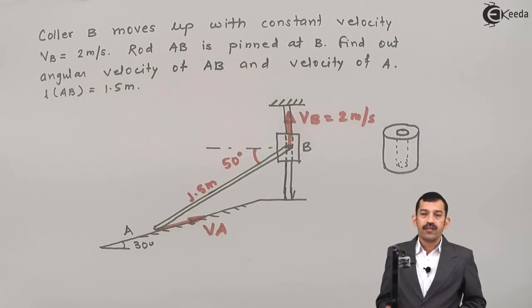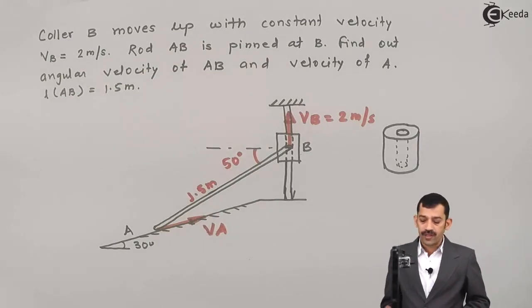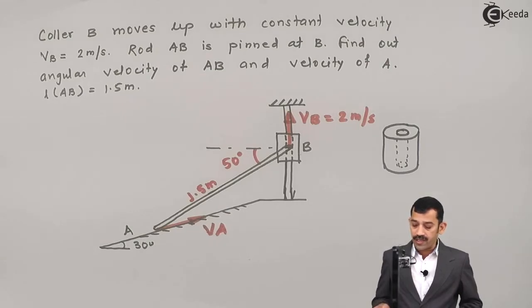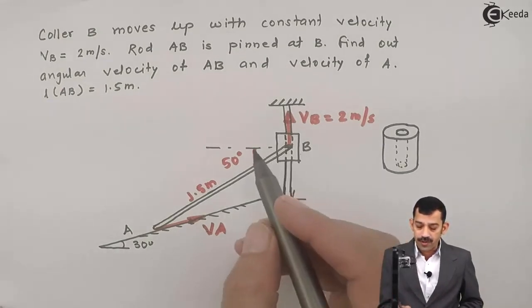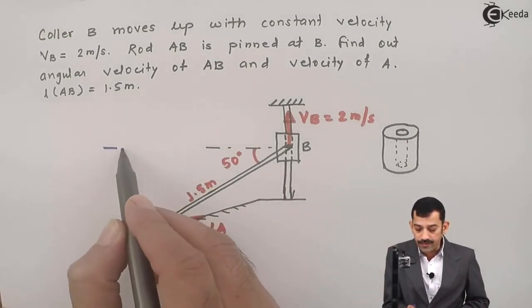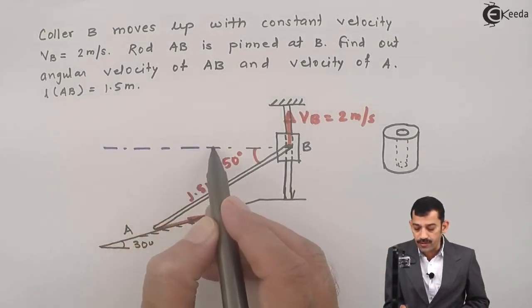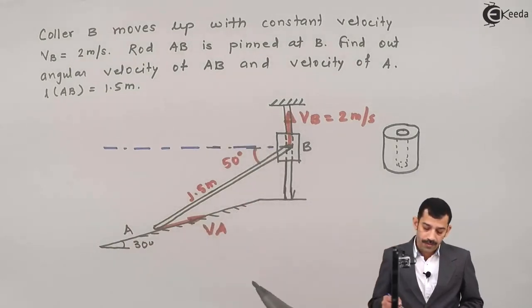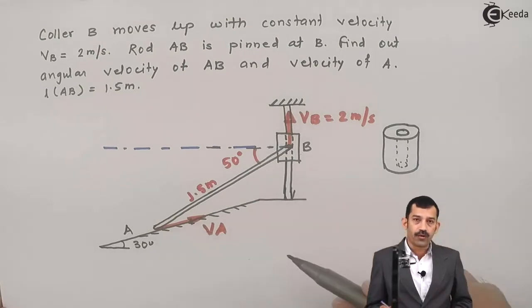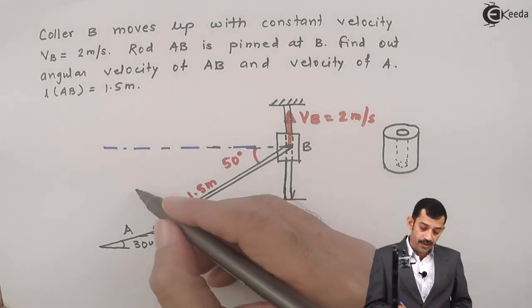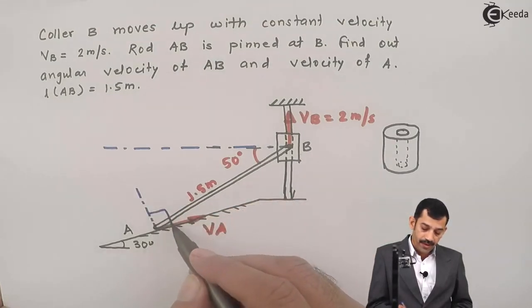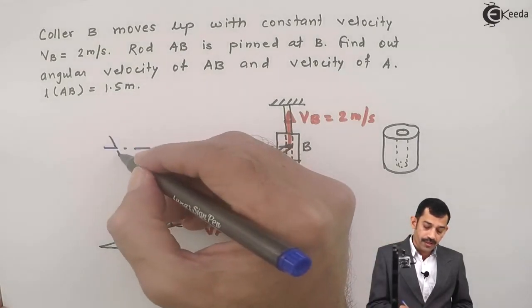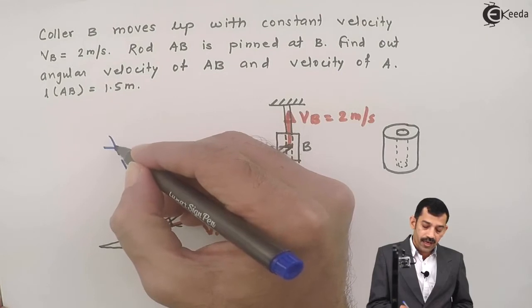Since the directions of linear velocities at two points are known, we will locate the ICR by drawing perpendiculars to the velocity vectors — perpendicular to VA and perpendicular to VB. Drawing perpendicular to VB gives a horizontal line, and drawing perpendicular to VA gives a line perpendicular to the inclined plane. The point of intersection of these two lines is the ICR.